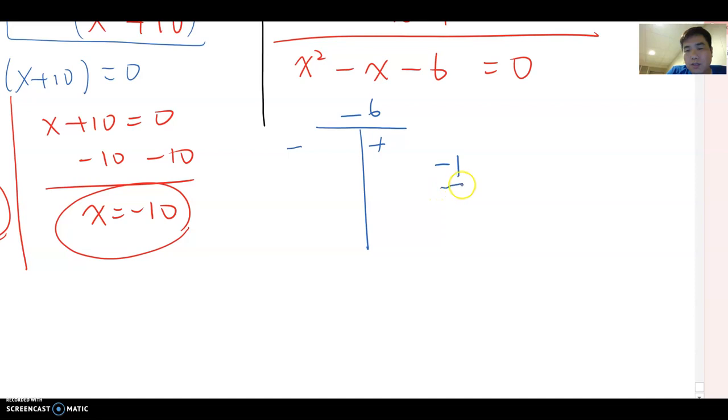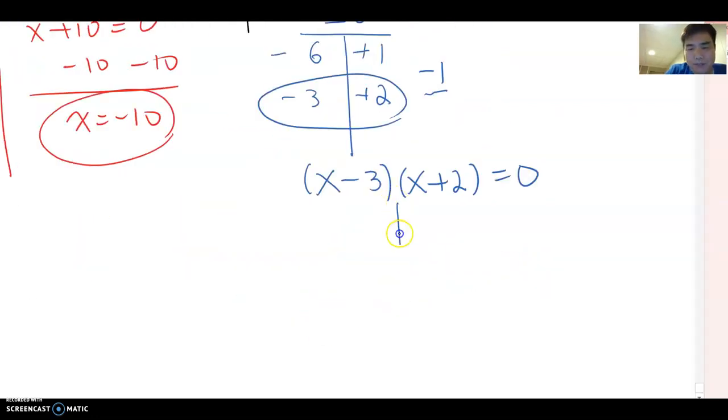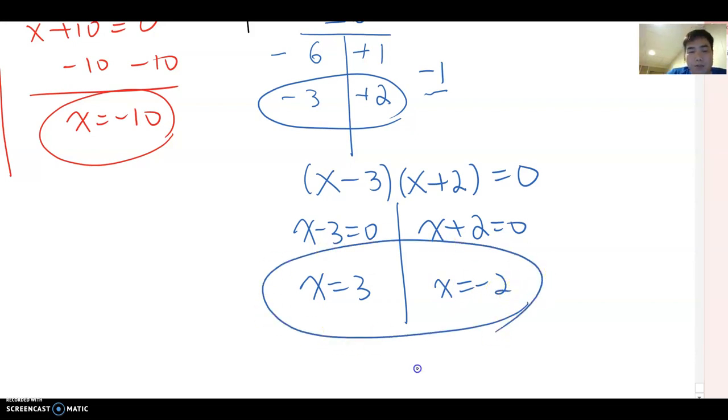You can rewrite this: x minus 3 and x plus 2 equal to 0. Therefore, you can set up x minus 3 equal to 0, x plus 2 equal to 0. So x equal to 3 or x equal to negative 2. That will be the answer for this equation.